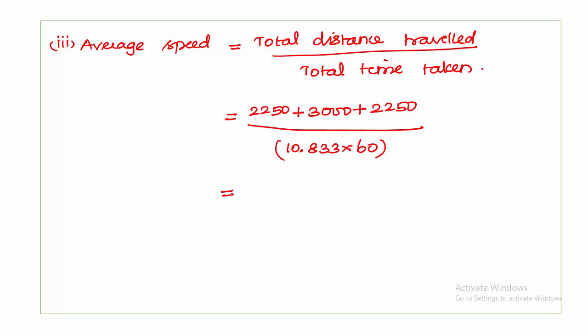Dividing total distance 7500 meters by total time (10.833 × 60 seconds) gives an average speed of 11.54 meters per second. If you want this value in kilometers per hour, you can convert accordingly. This completes the solution to the problem. Thank you.